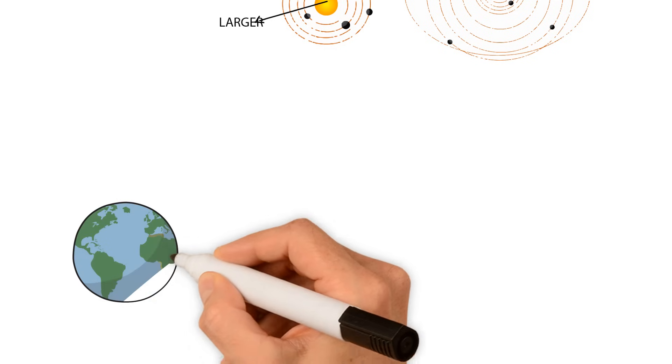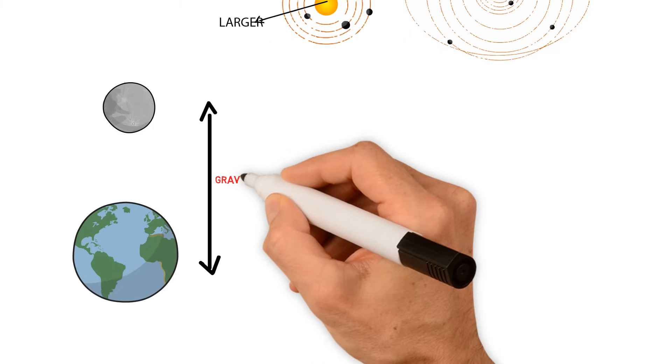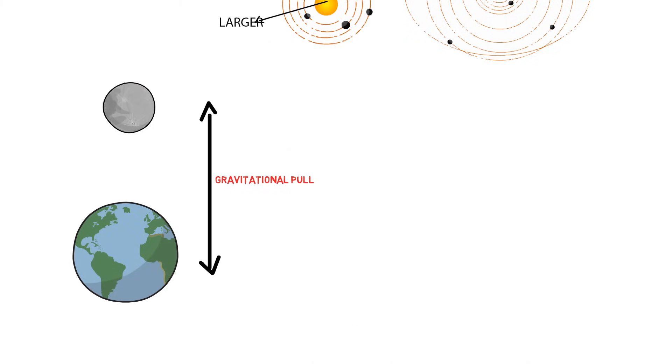Now imagine this is earth. The moon is right above it. Both earth and the moon will exert some gravitational pull. Now we know that everything on earth is grounded, and it is because of the gravitational pull of the earth.